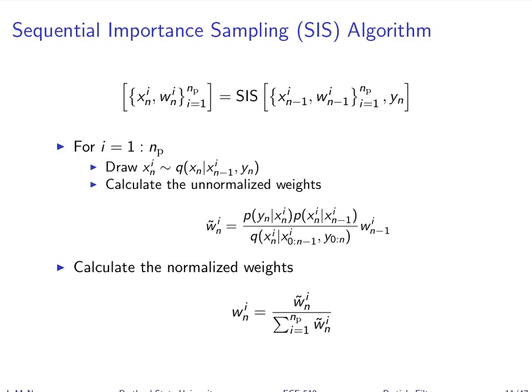For each particle we do a loop — or if you had enough parallel processors, you could do all of this in parallel. You simply advance the particle one step ahead by drawing from your importance density. You've got to pick what that is — I'll say more about how to pick it shortly. It can be conditioned on a measurement or the previous state, or it doesn't have to be. It's one of your design decisions that you'll need to defend when presenting your homework, projects, and when applying this in the real world.